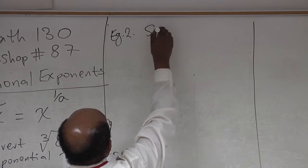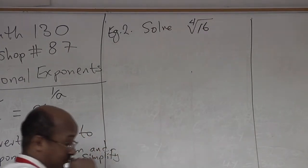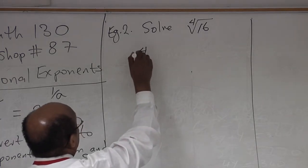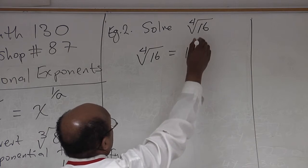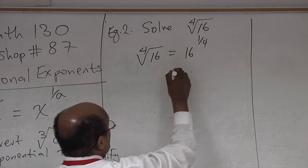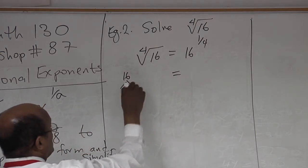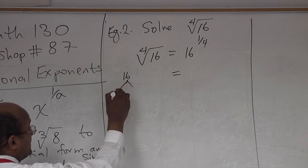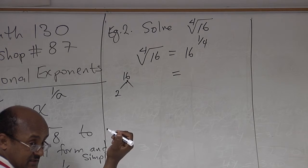Now solve the fourth root of 16 by converting to exponential form. The fourth root of 16 means 16 to the power of 1 over 4. Apply prime factorization — since 16 is an even number, always start with the smallest prime number, which is 2: 2 times 8.